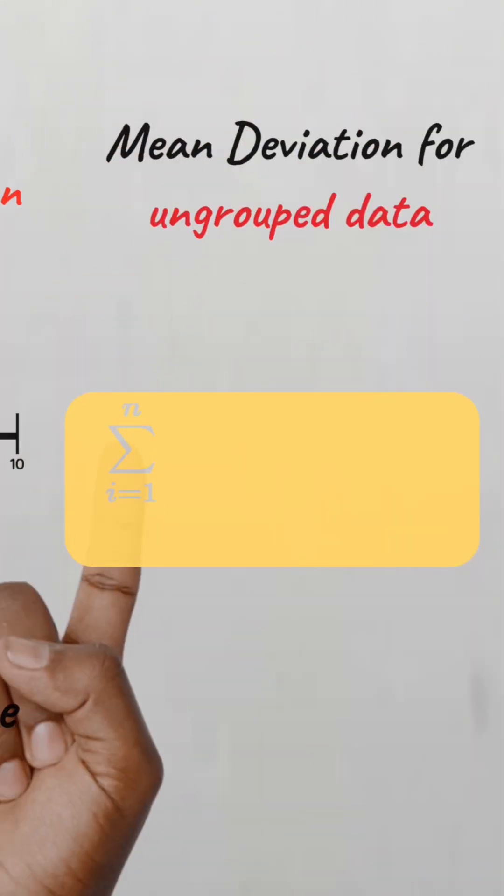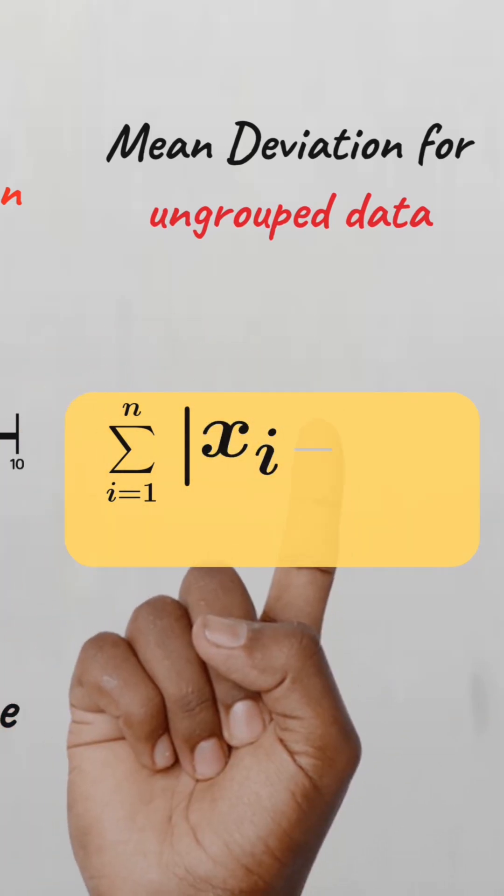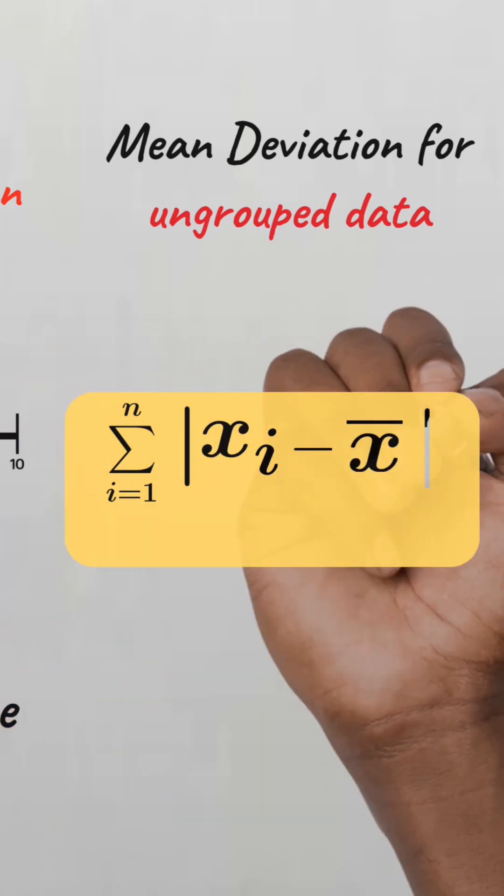It is given by the sum from i=1 to n of the absolute value of x_i minus x-bar, divided by the number of observations.